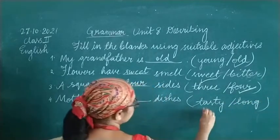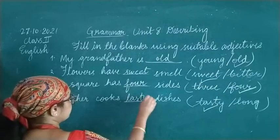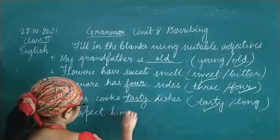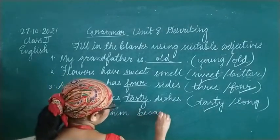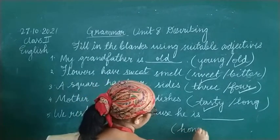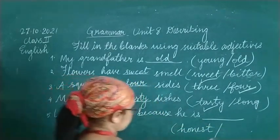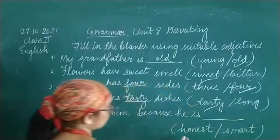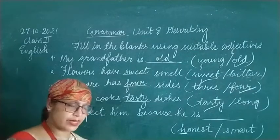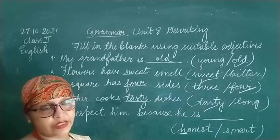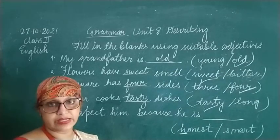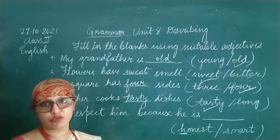Number 5: We respect him because he is blank. The options are honest and smart. The answer is honest. Note that the H in 'honest' is silent. In English there are many words where some letters are silent — they appear in the spelling but are not pronounced. So we say 'honest', not 'h-onest'.